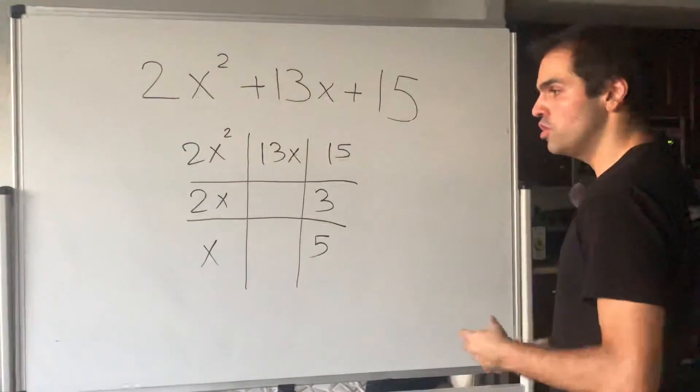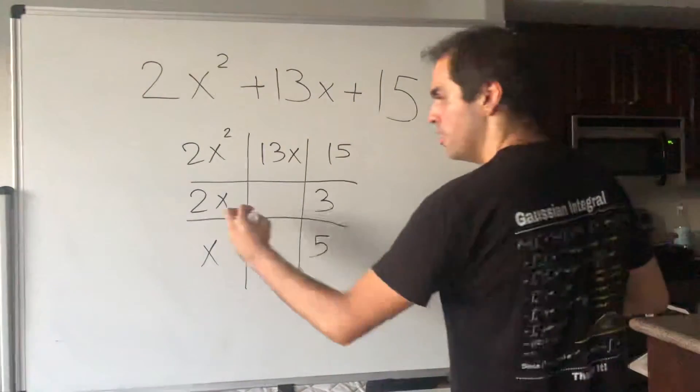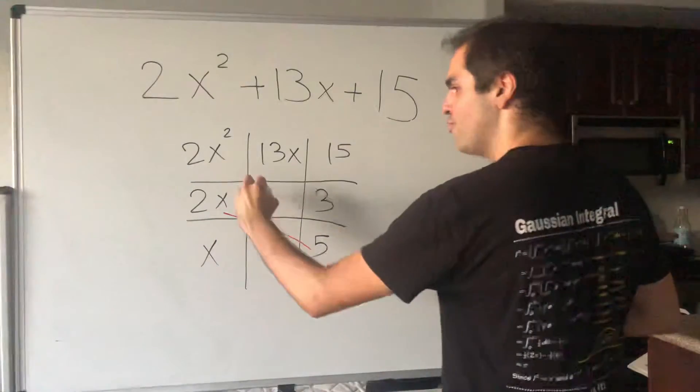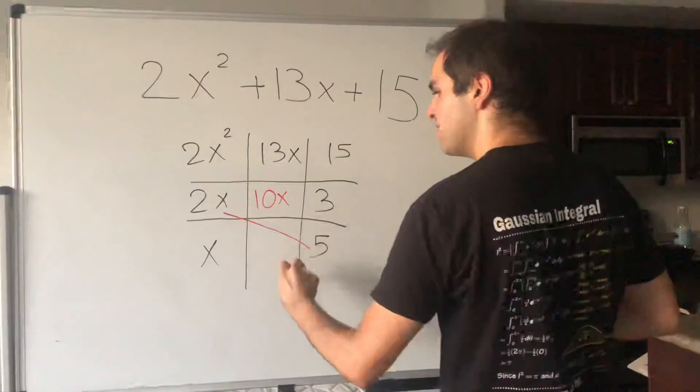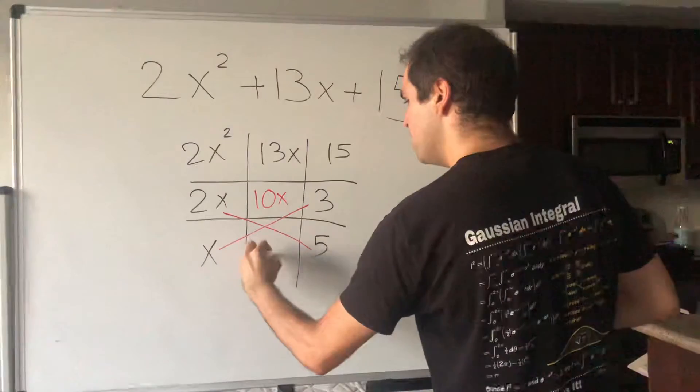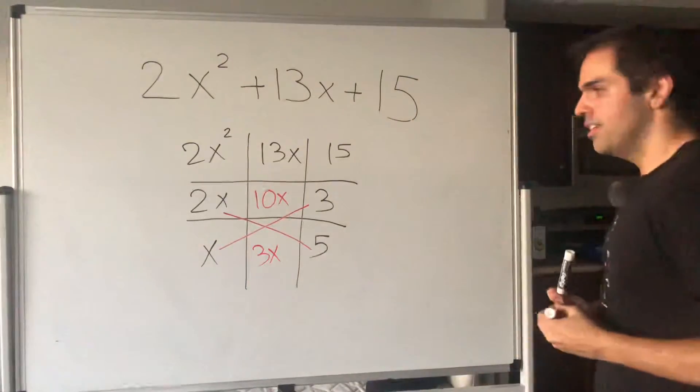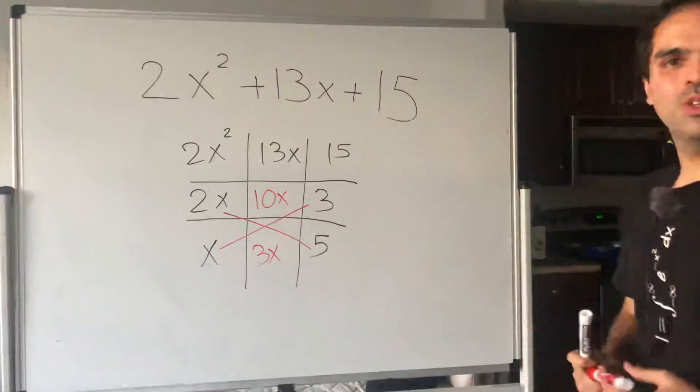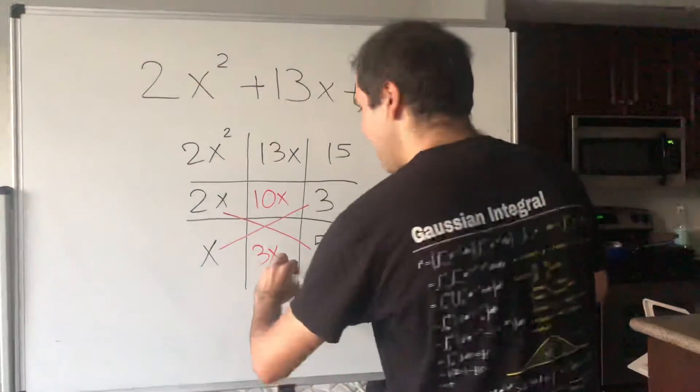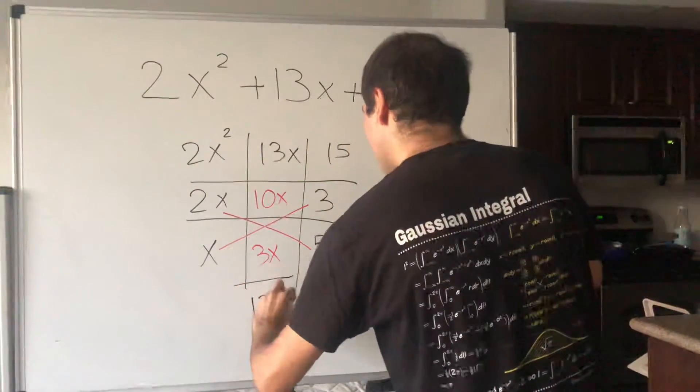And then you just consider the cross terms. So you do 2x times 5, which is 10x, and x times 3, which is 3x. And then you just add up the terms here. So you get 10x plus 3x, which is 13x.